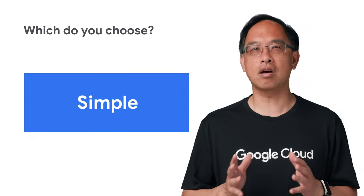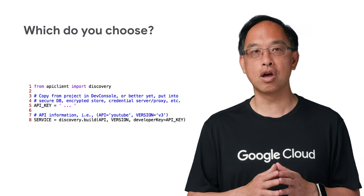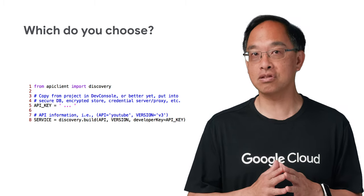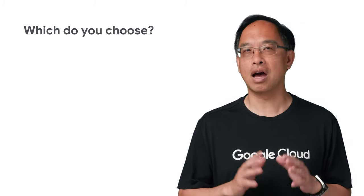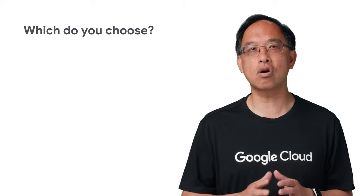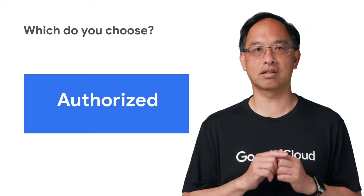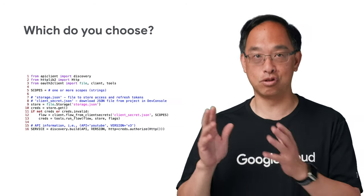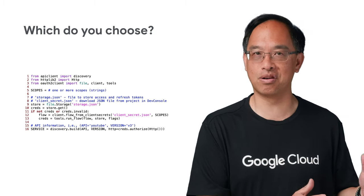Simple APIs are for accessing public data, like searching for places on Google Maps, querying for YouTube videos, or sending a sentence to the Cloud Natural Language API. However, if your code requires access to user or application data, you need authorized access. For user data, that's user authorization, and for app data, that's service account authorization.